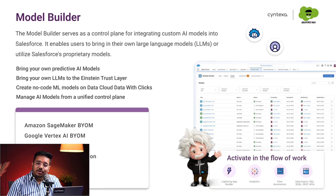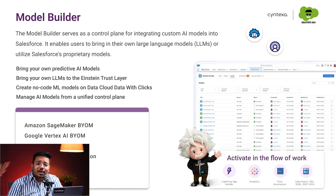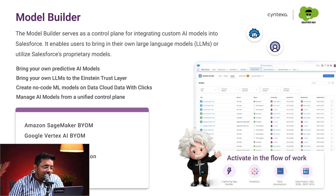Then we have Model Builder. So you have the capability to choose your own LLM, but if you don't want to use a specific LLM and want to bring in your own that you have fine-tuned and created, you can do that with Model Builder. You can bring in that model, configure it, and then use it in your prompts, AI generations, and AI responses. We have the capability to bring your own model from Amazon SageMaker, Google Vertex AI, Databricks, no-code machine learning models, OpenAI, and Azure OpenAI — which you can fine-tune and then use in your workflows.